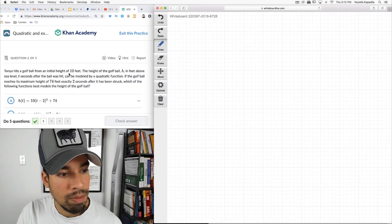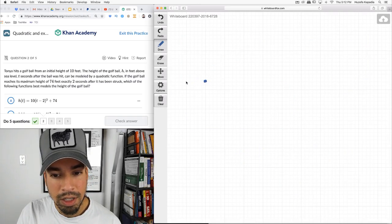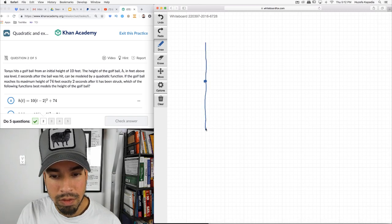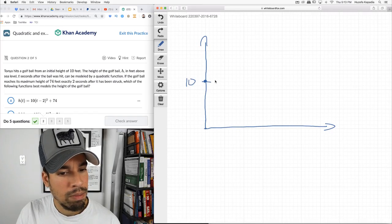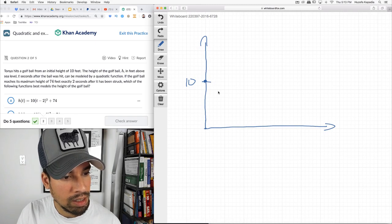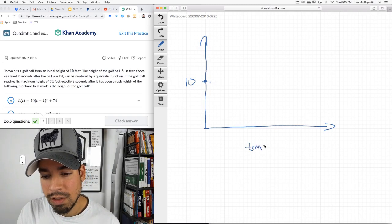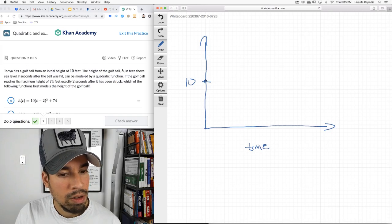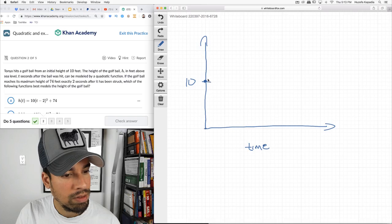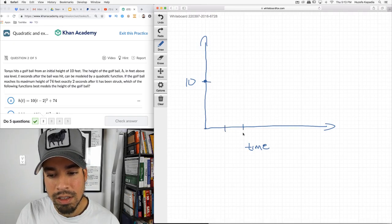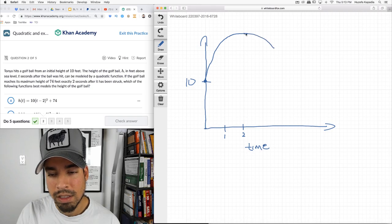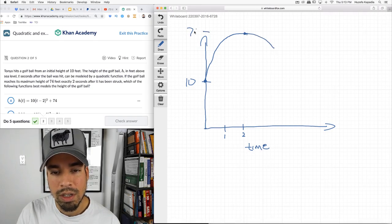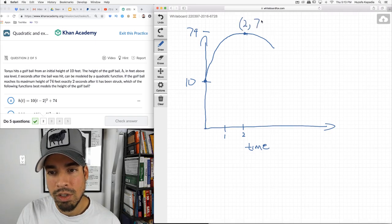Next, Tanya hits a golf ball from an initial height of 10 feet. The height of the ball H, in feet above sea level, T seconds after can be modeled by a quadratic function. If the golf ball reaches a maximum height of 74 feet exactly 2 seconds after it's been struck, there's the max at 74. So we've got 2 seconds, 74. There's my vertex.